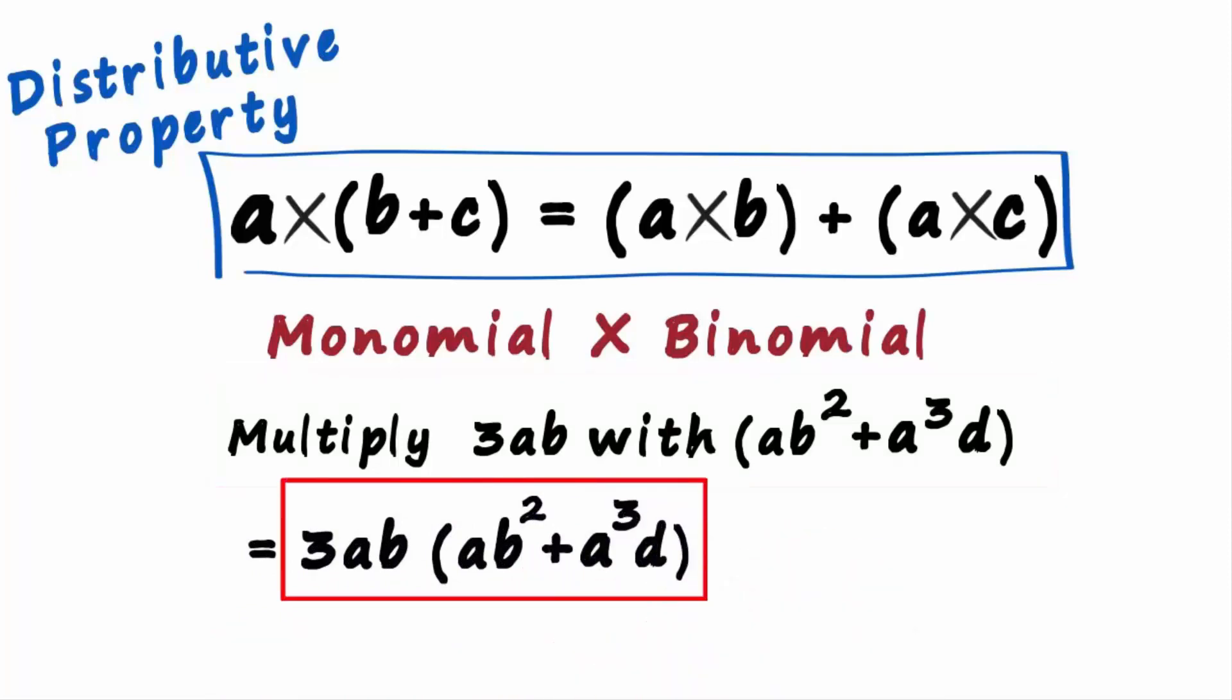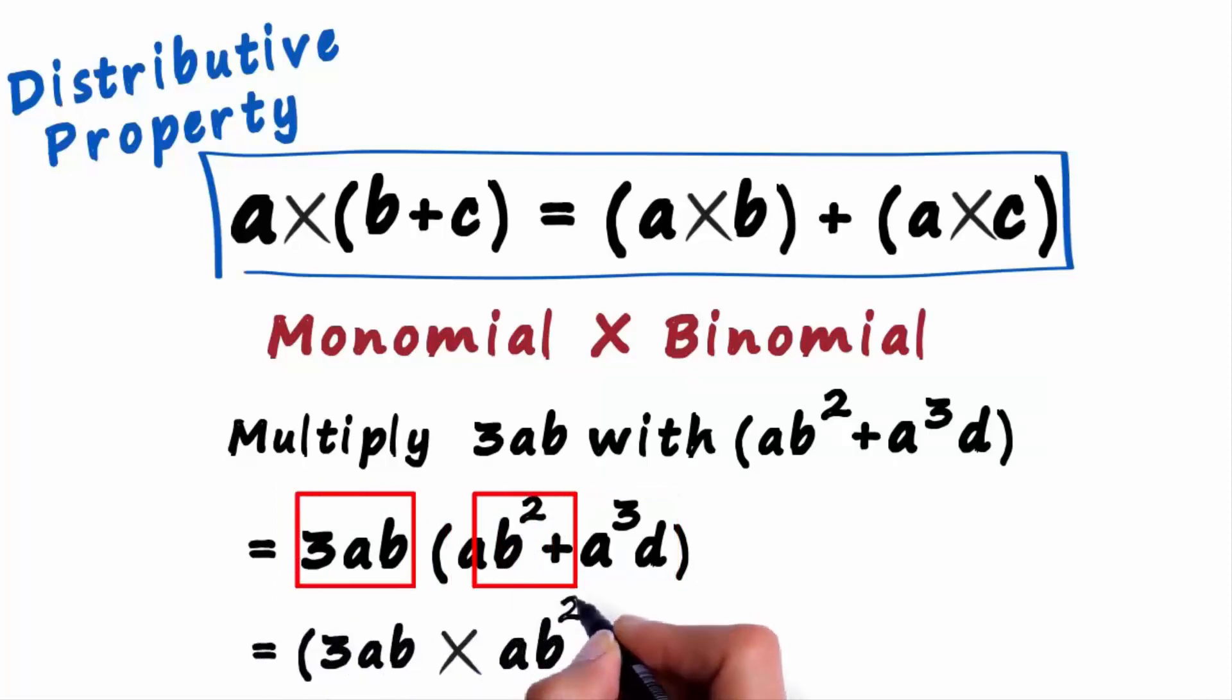Like the distributive property, this will be multiplied with this and added to the product of these two terms. It will be 3ab multiplied by ab squared plus 3ab multiplied by a cubed d.